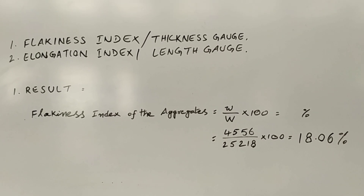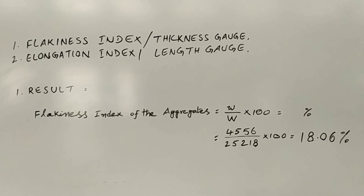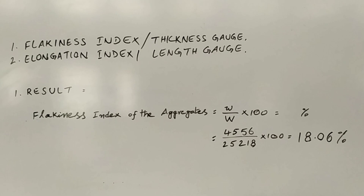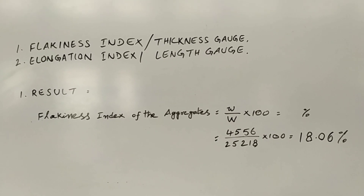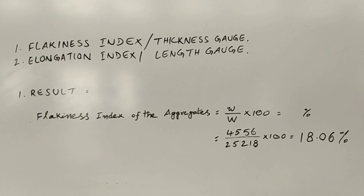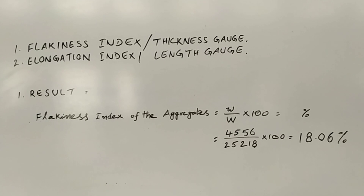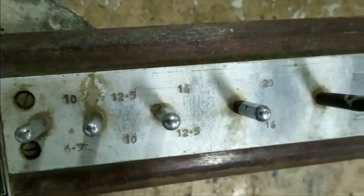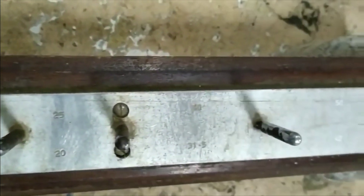For the calculation, the weights of the separated size ranges of aggregates during sieve analysis are recorded as small w and capital W. Small w is the total weight of aggregates that passed through the thickness gauge. The result shows a flakiness index of 18%.